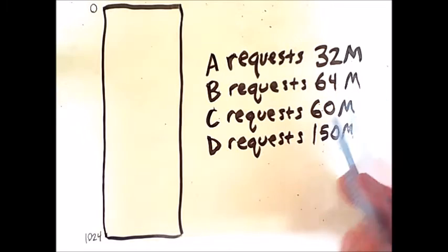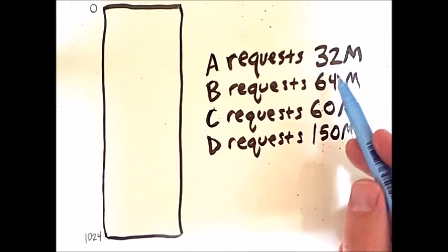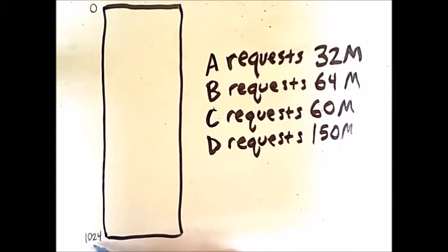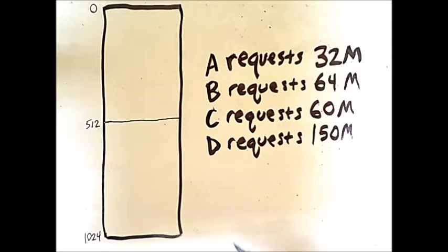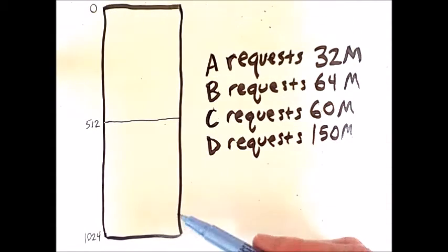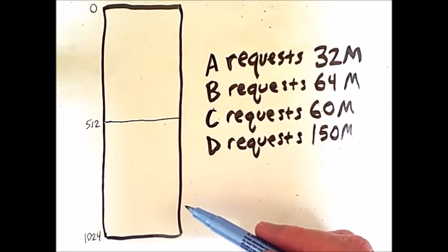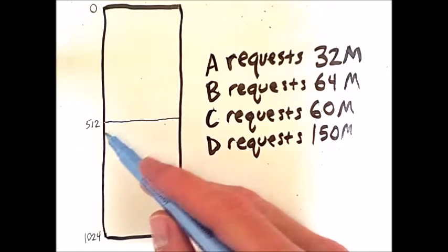As a result, memory is split into two equal portions, and we continue to look for a partition that can hold this 32 megabyte request.